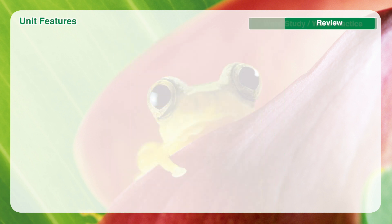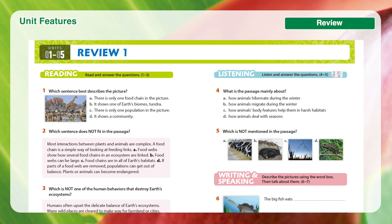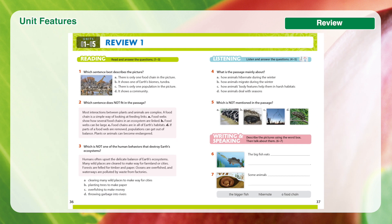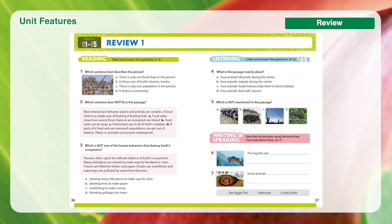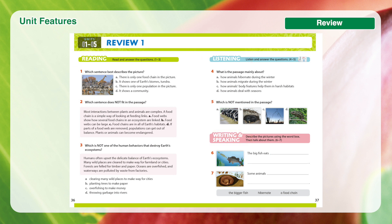The Review section appears every five units and allows students to review the main concepts in the preceding five units. It covers four skills: reading, listening, writing, and speaking. Students are asked to find the main idea or details after reading or listening to some short passages, and to describe and talk about the pictures.